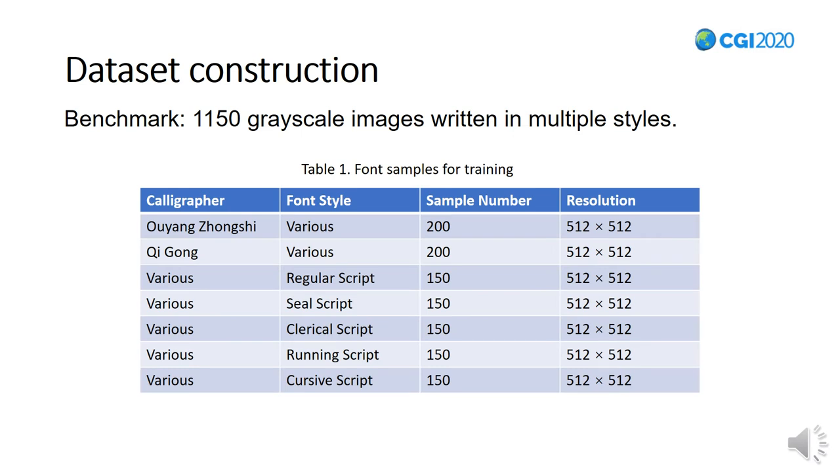Unfortunately, there are no ground truths available for network training. Therefore, we need to construct a relief dataset containing enough calligraphy font images and corresponding font reliefs. To achieve this, we build a benchmark containing 1,150 grayscale images, in which the calligraphy fonts are written in multiple styles.